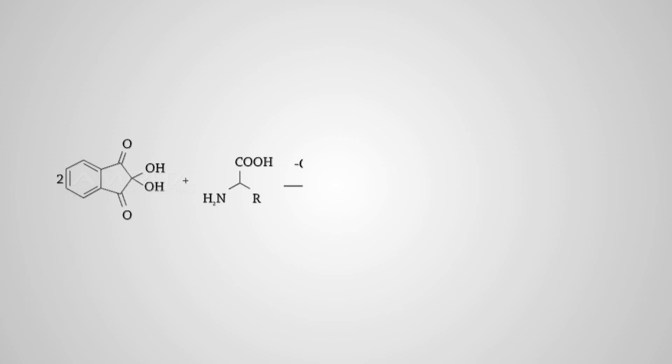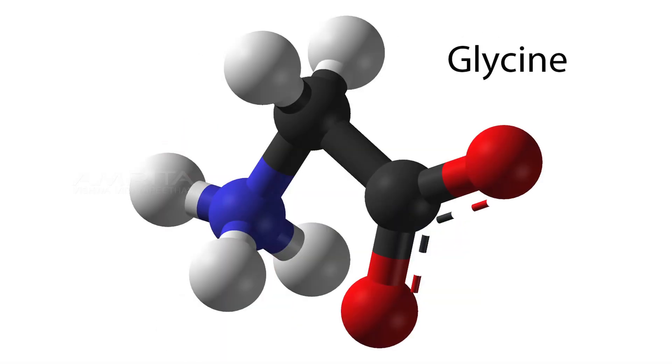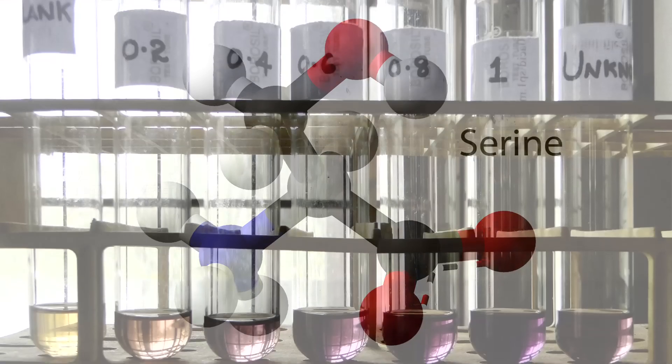Alpha amino acids react with excess Neenhydrin to form a purple colored product, Ruhmann's purple. It is one of the most reliable methods for detection of amino acids in their microgram concentrations.